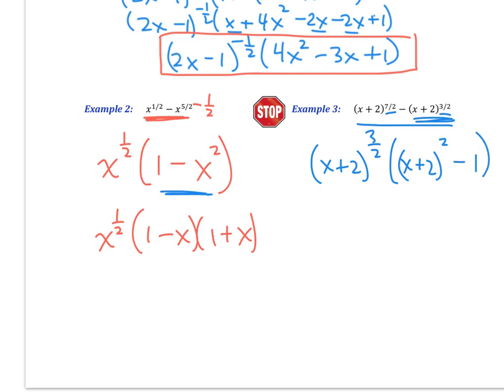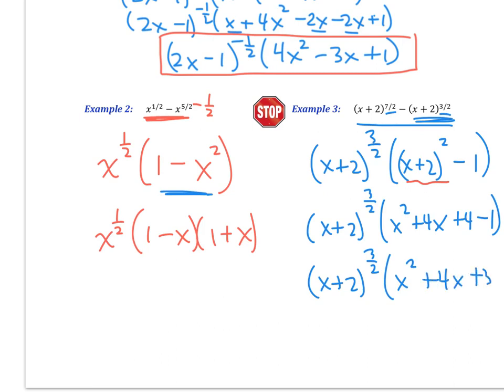Like I did in example 1, what we should probably think about doing is maybe foiling this out. So let's do an x plus 2 to the 3 halves power. And if we FOIL this out, we get an x squared plus 4x plus 4 minus 1. And if I simplify, I've got an x plus 2 to the 3 halves power, and then x squared plus 4x plus 3. All right, and that's our final answer.